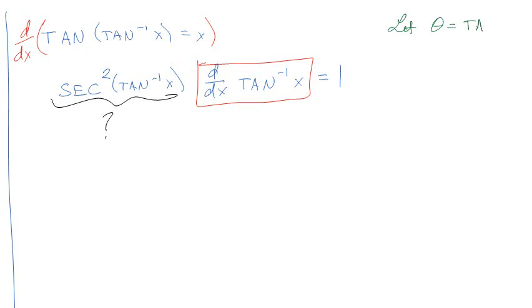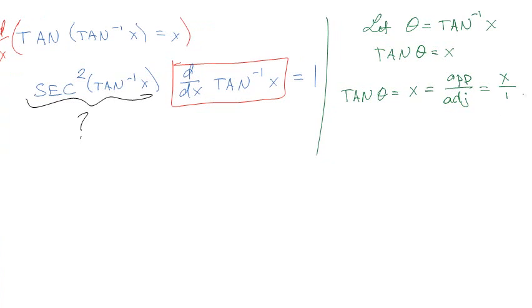Basically what I'm going to do is I'm going to let this thingy, theta, be equal to the inverse tangent of x. So that means that the tangent of theta is equal to x. Now if you remember anything about tangent, besides the fact that the derivative is not secant tangent, you'll know that the tangent is equal to x, but that's also opposite over adjacent. So I could very well say my opposite is equal to x, and my adjacent is equal to 1.